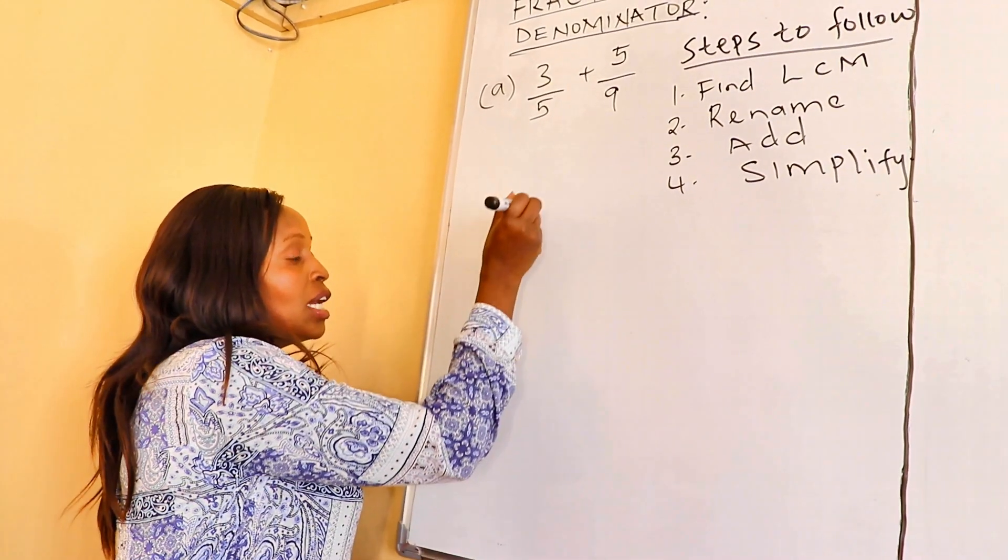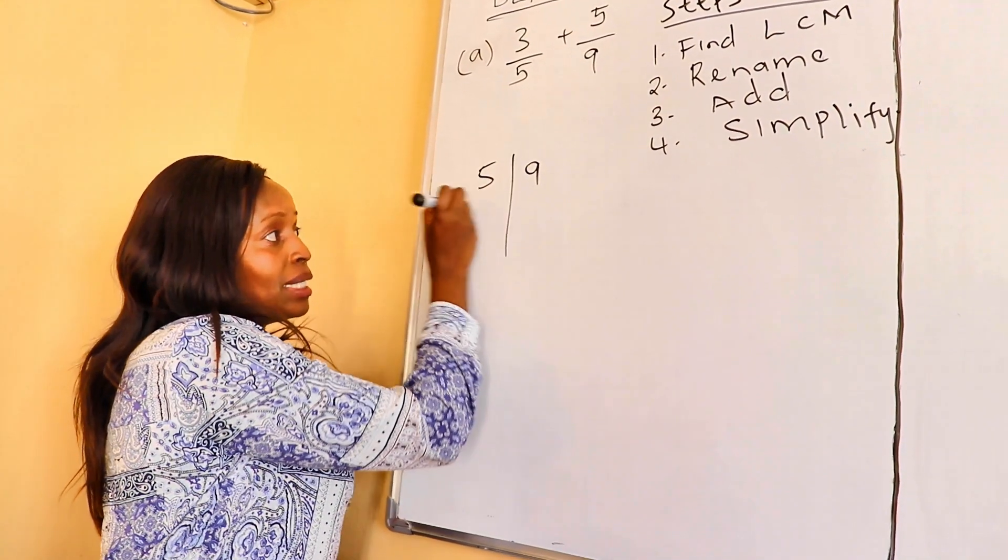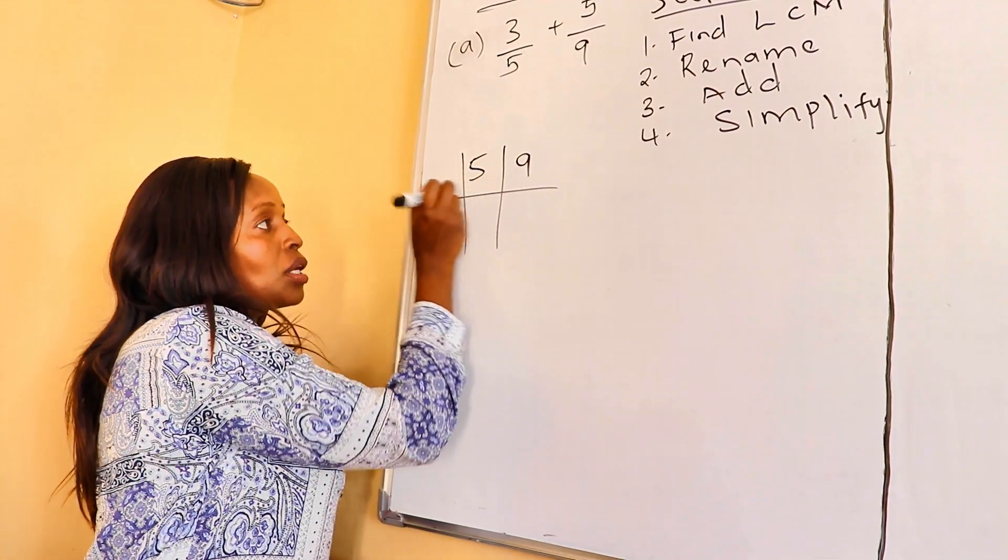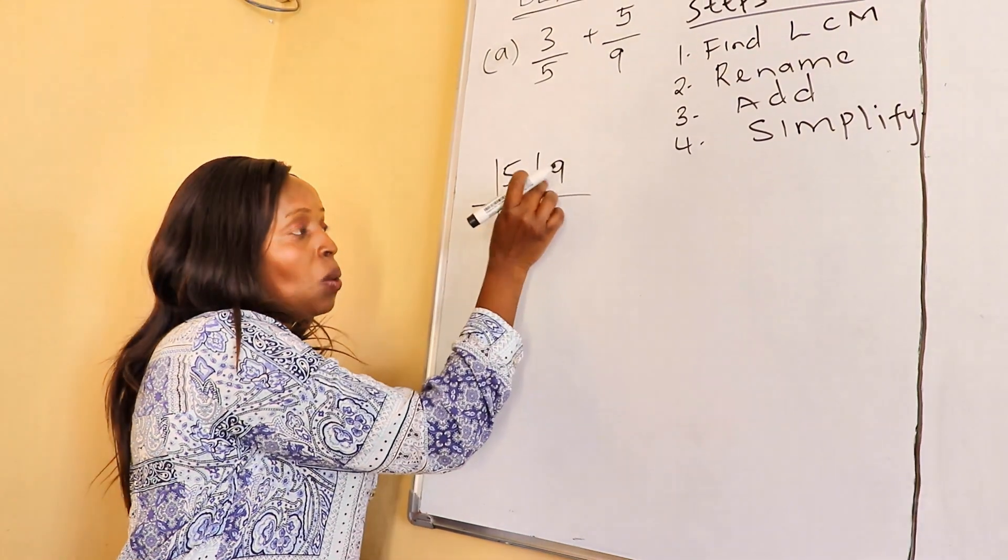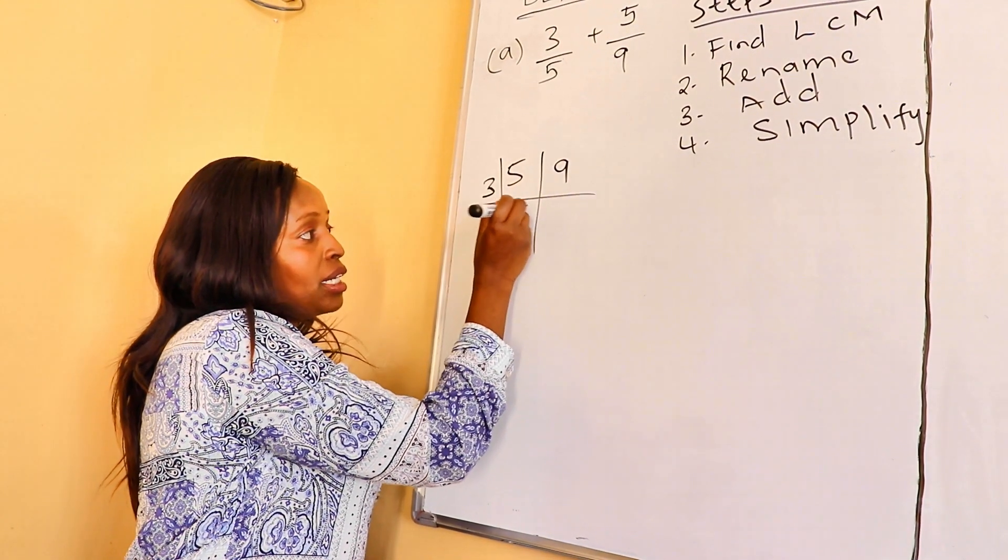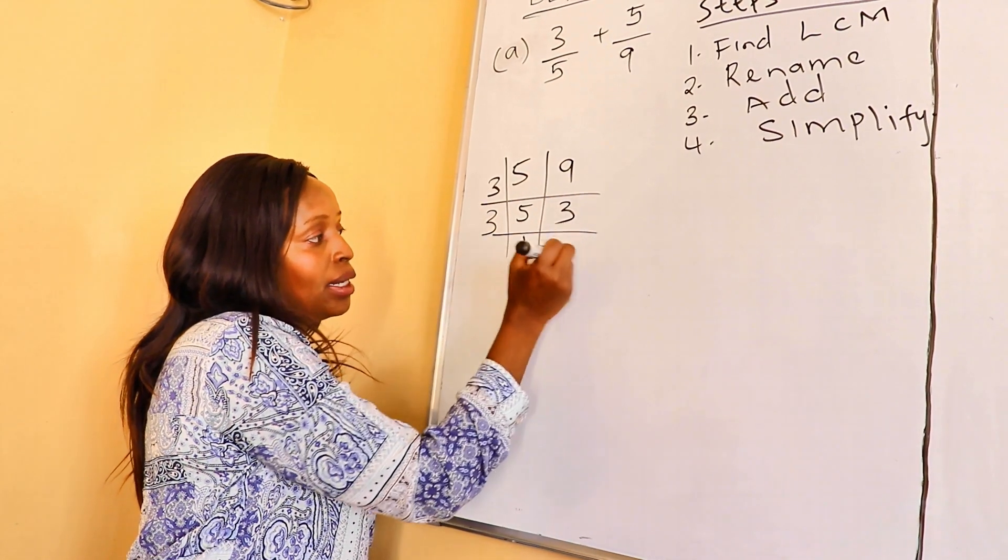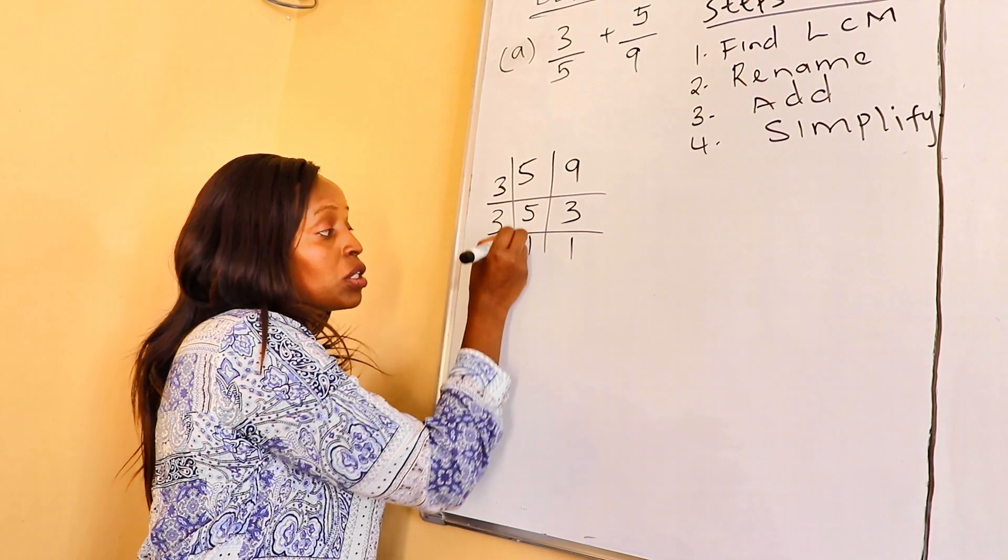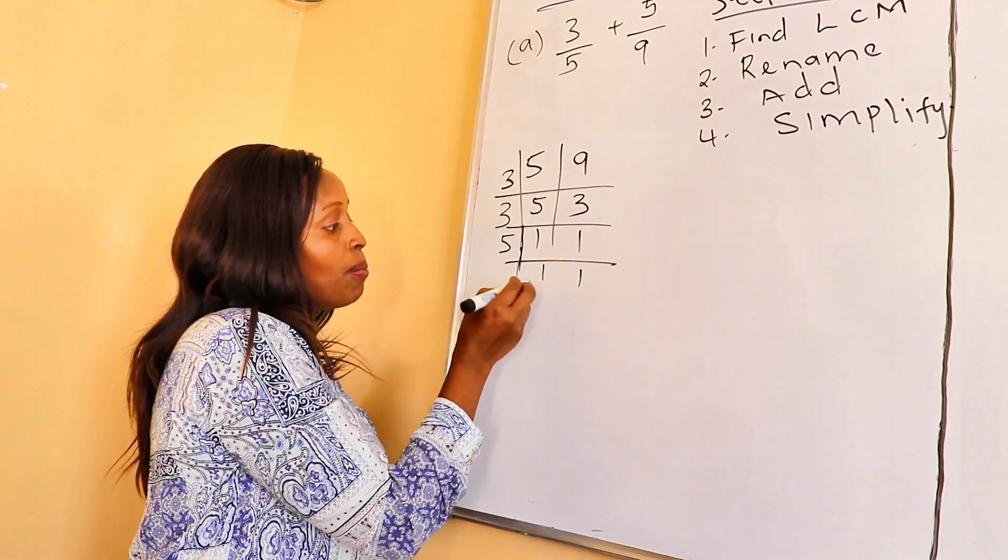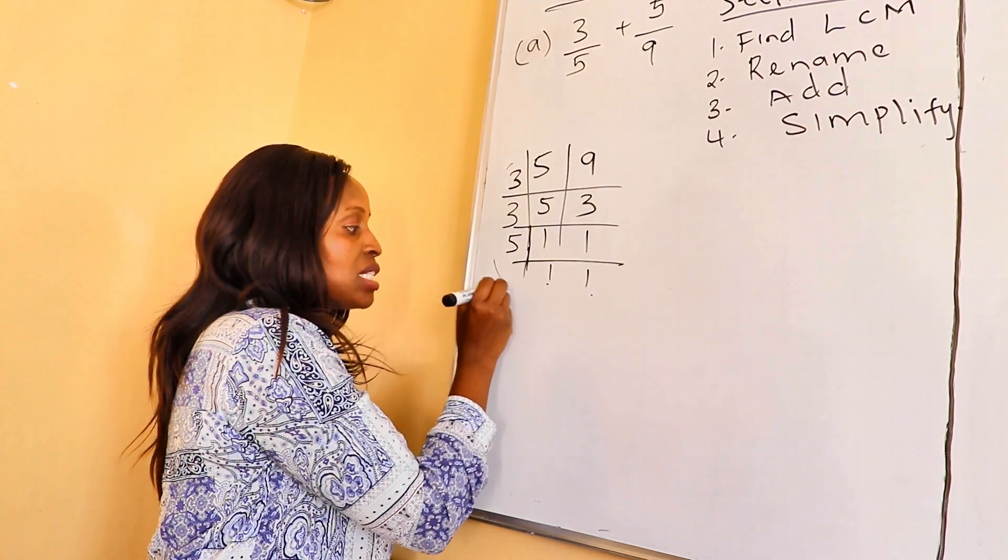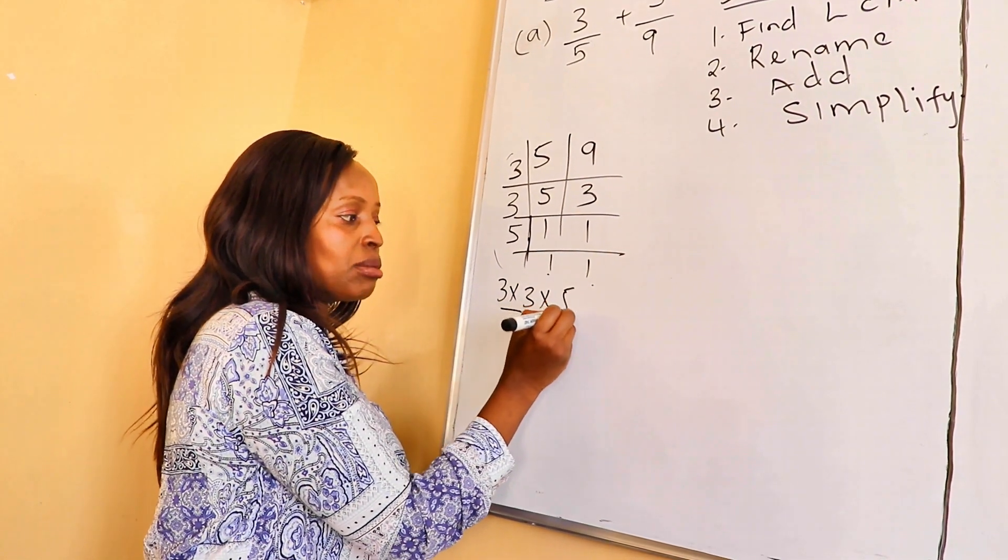The LCM of 5 and 9, we can use two methods. The first method is a table. So, here, we look for a common divisor. 5 and 9 don't have a common divisor. So, which number can divide 9? 3 can divide 9, giving us 3. Then 3 again here, we get 1 and 1. So, we take our 5 there because 5 is a prime number. It's only divisible by 1 and itself. After getting 1 and 1 here, we pick these numbers and multiply them. 3 times 3 is 9. 9 times 5 is 45.